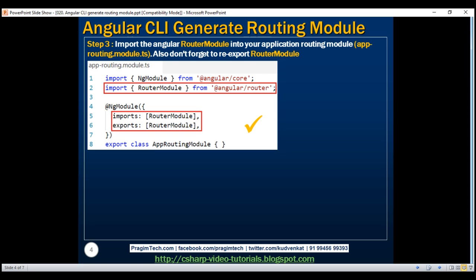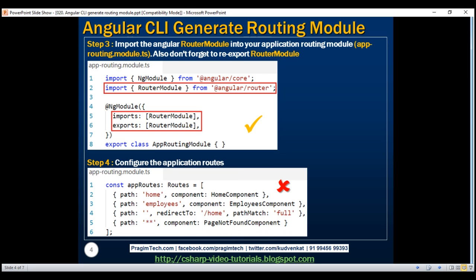Step 4: Configure the application routes. This is something Angular CLI is not able to implement for us because it does not know what routes we want within our application. Before we can configure our routes, we need to create three components: home component, employees component, and page-not-found component. So let's go ahead and create these three components.